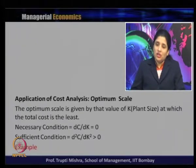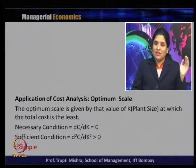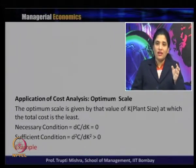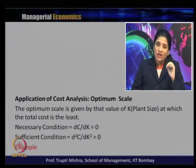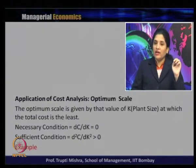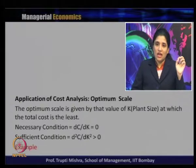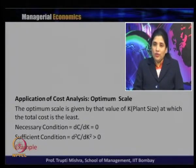There is a significant difference here: in the previous two cases we identified the level of output or stock where average cost was minimum, but here we find the plant size K where total cost is least. The necessary condition for optimum scale is dC/dK = 0 (first order condition), and the sufficient condition is d²C/dK² > 0 (second order condition).